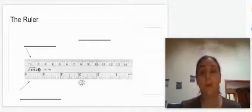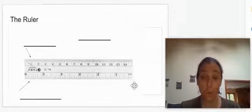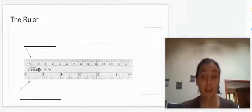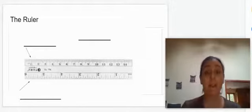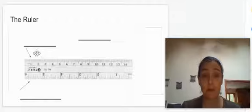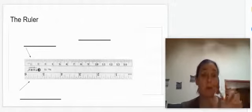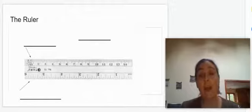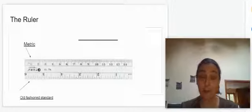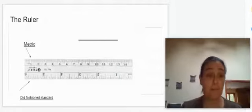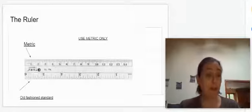Now, which side do we use? Well, we are never ever going to use this bottom side. That's the old fashioned standard English inches, inches, feet. We don't use that in science at all. We're going to use metric, which is the top part of the ruler. So anytime you are asked to measure anything in this course, you will always use that side of the ruler. And that is the metric. And the old fashioned standard is on the bottom. You are going to use metric only.